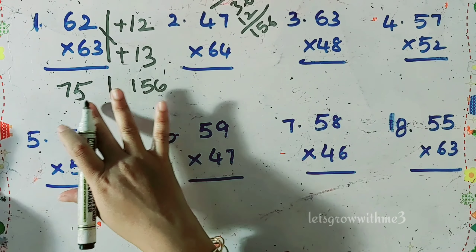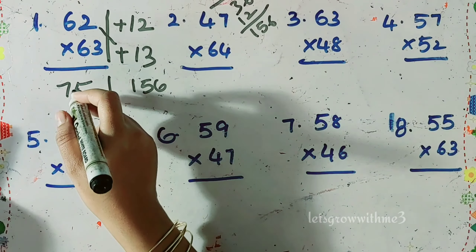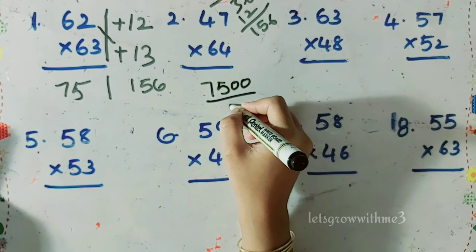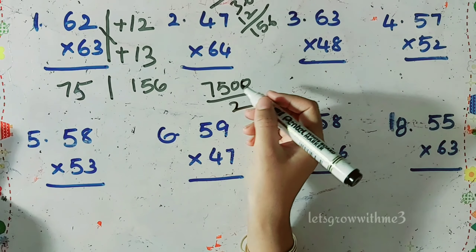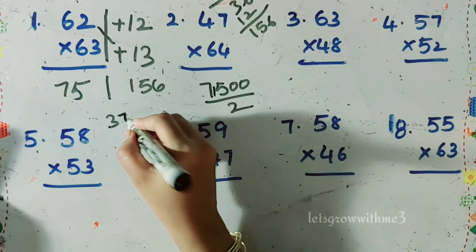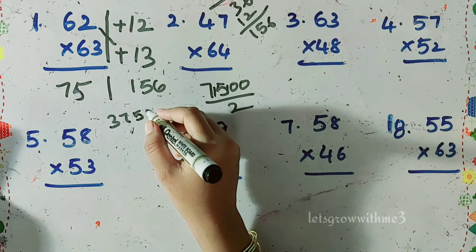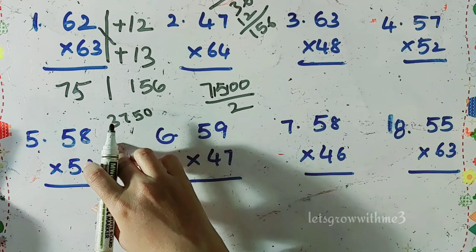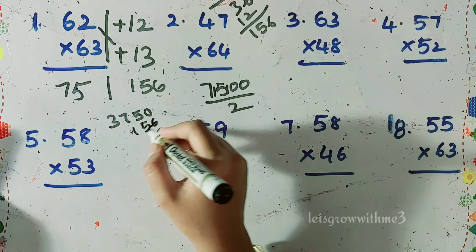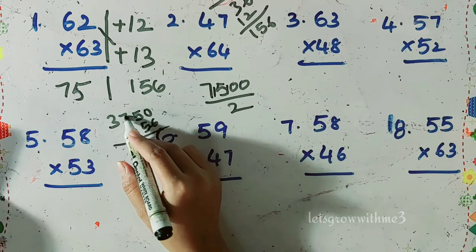Now we need to convert this value to base 50. First, convert to base 100 by multiplying with 100, giving 7500, then divide by 2. Three 2s are 6, seven 2s are 14, five 2s are 10, then zero — so the value is 3750. This step differs from the earlier video; we don't have this step there.